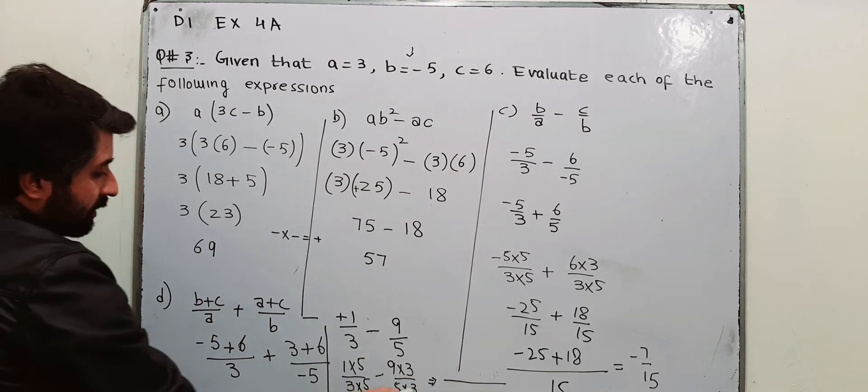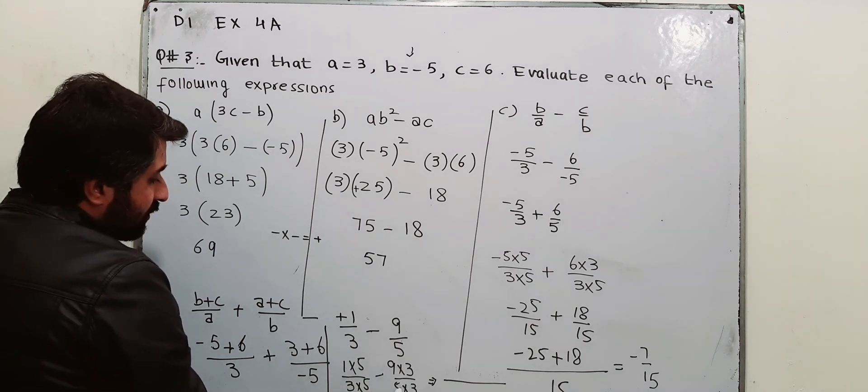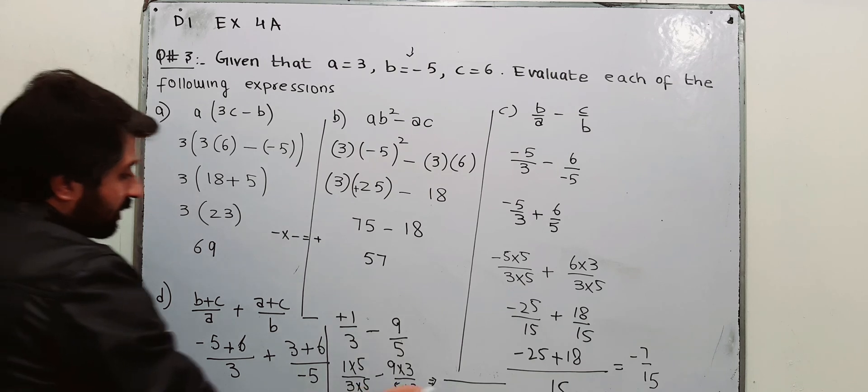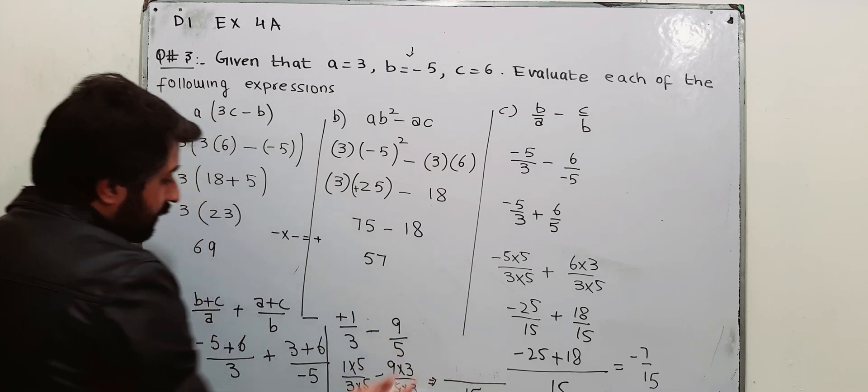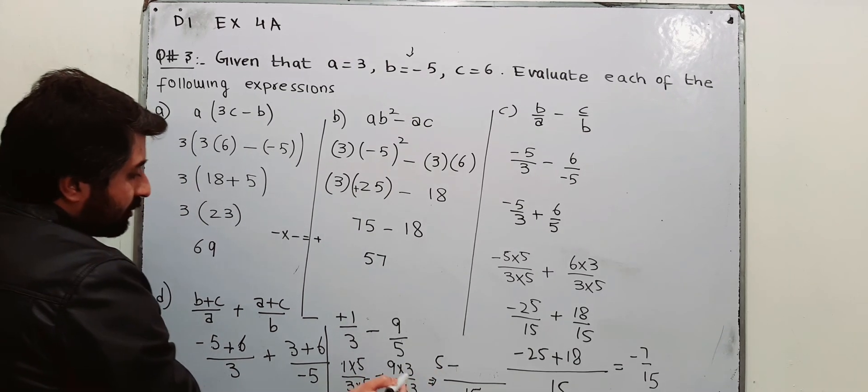It will be 15 over here, 15 over here. You have 15 here in the denominator, 15 here in the denominator. Take LCM as 15. 1 into 5 is 5. Minus 9 into 3 is 27.